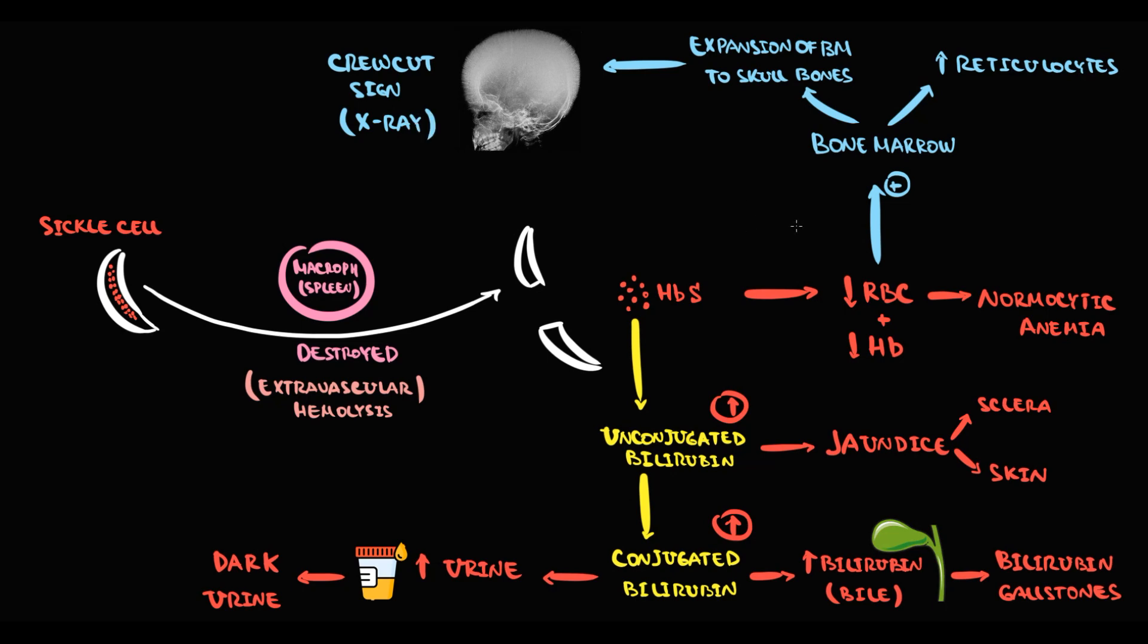If the function of the bone marrow is suppressed by some viral infection, in this state bone marrow cannot produce enough amount of red blood cells. And when destruction of red blood cells prevails over red blood cell production, a severe anemia develops. We call such condition aplastic crisis.